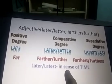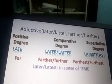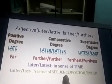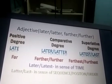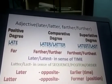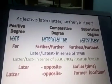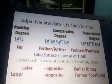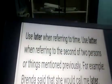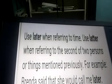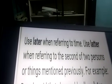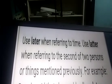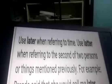Later and latest we use in the sense of time. Later and last we use in the sense of sequence, position, and order. The opposite of latter is earlier. The opposite of latter is former. We use later when referring to time, and we use latter when referring to the second of two persons or things mentioned previously.